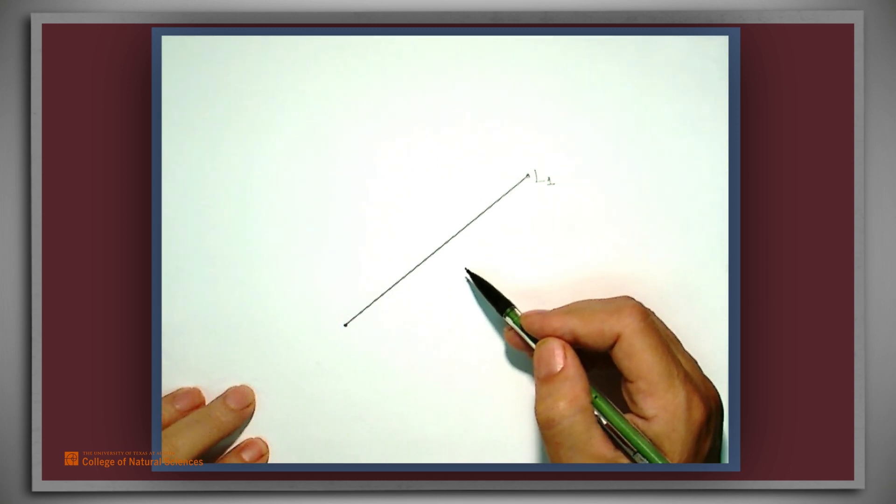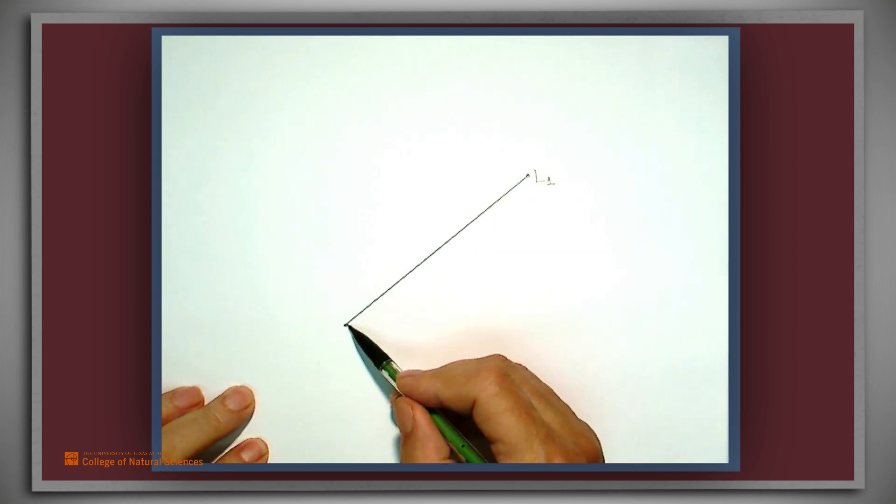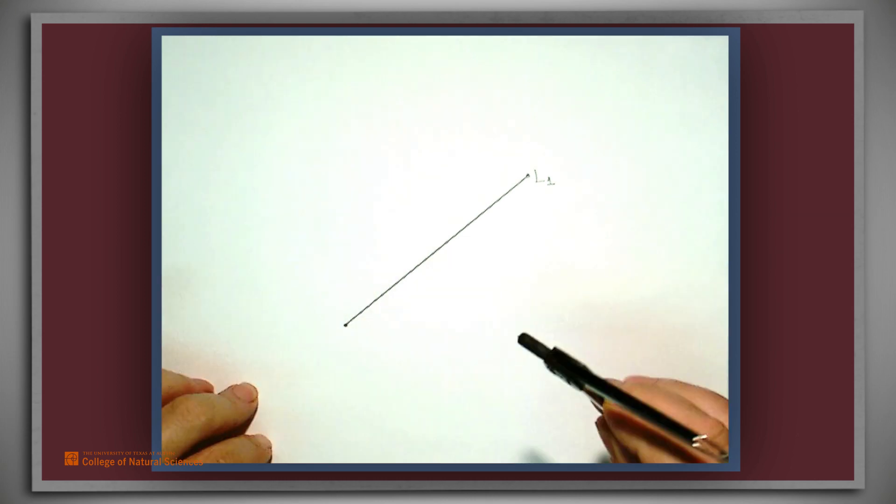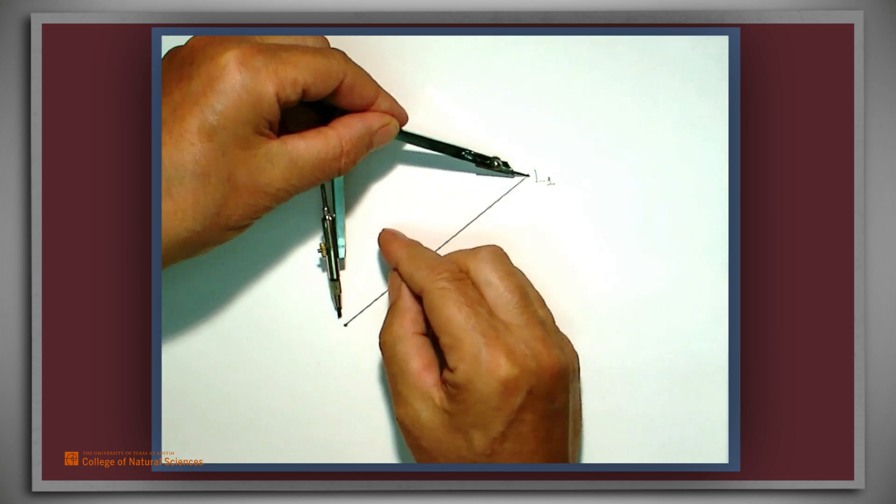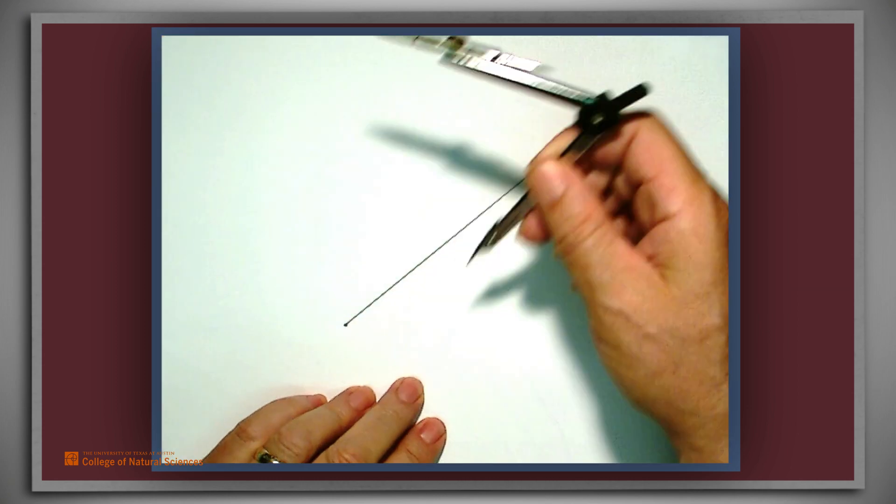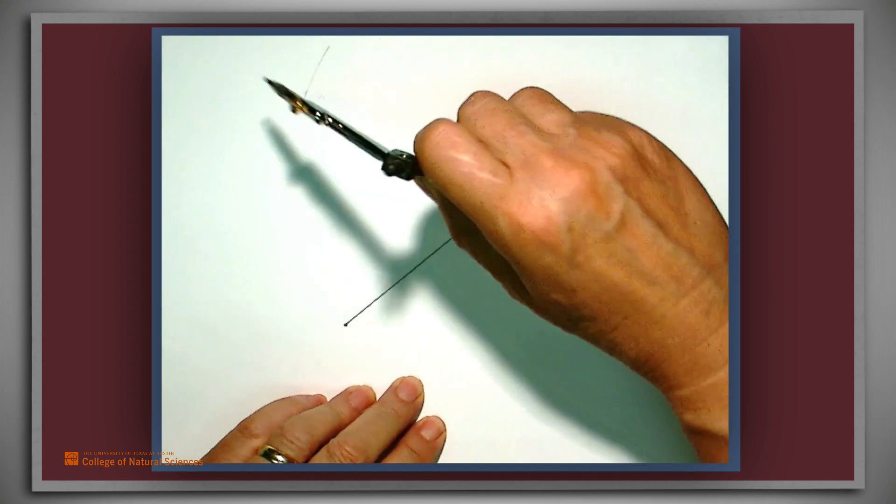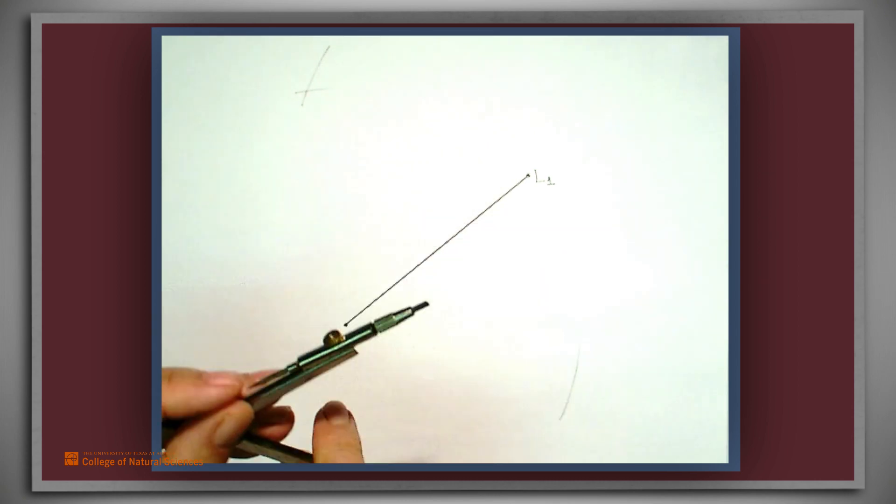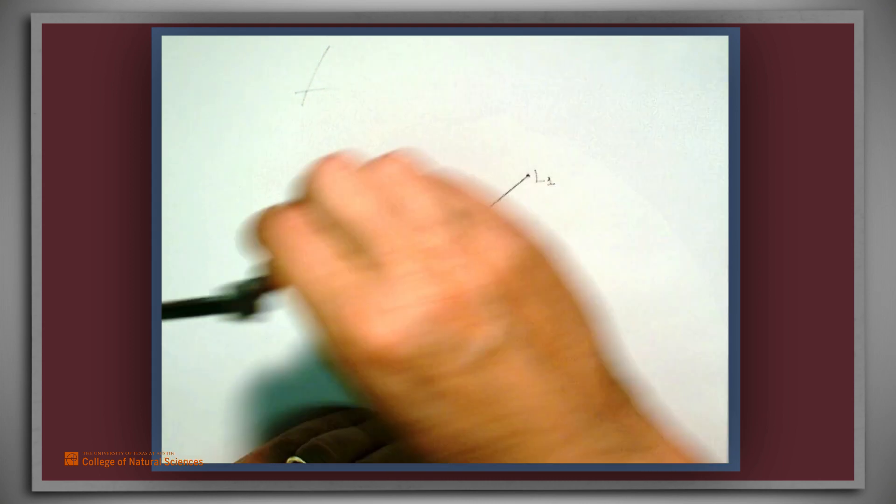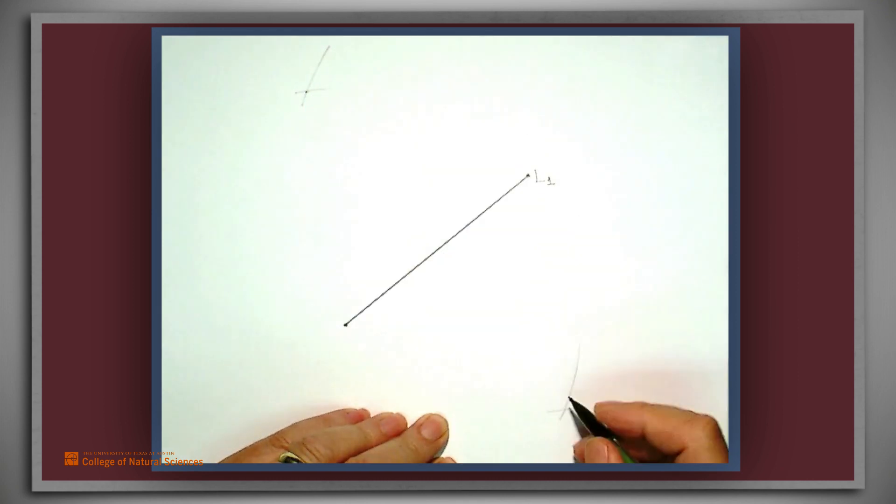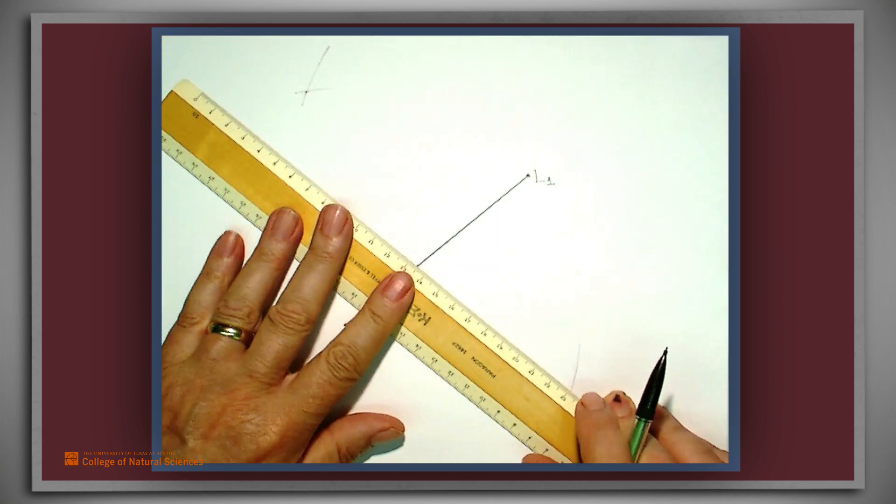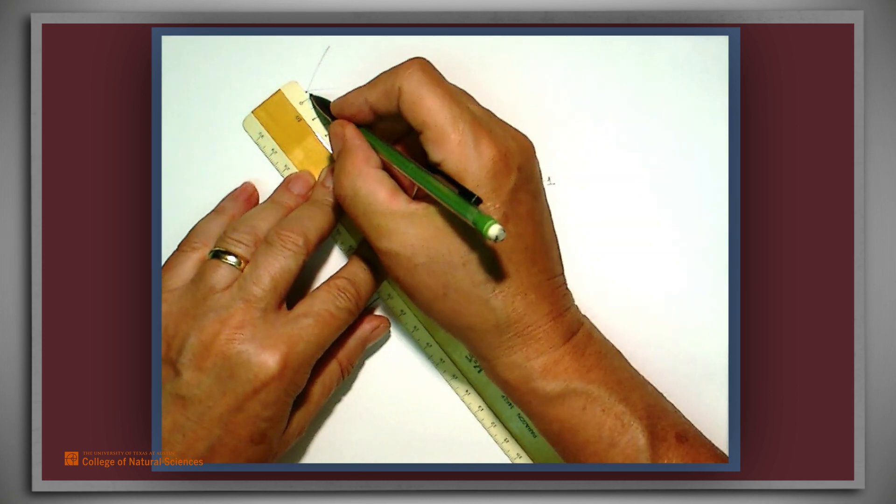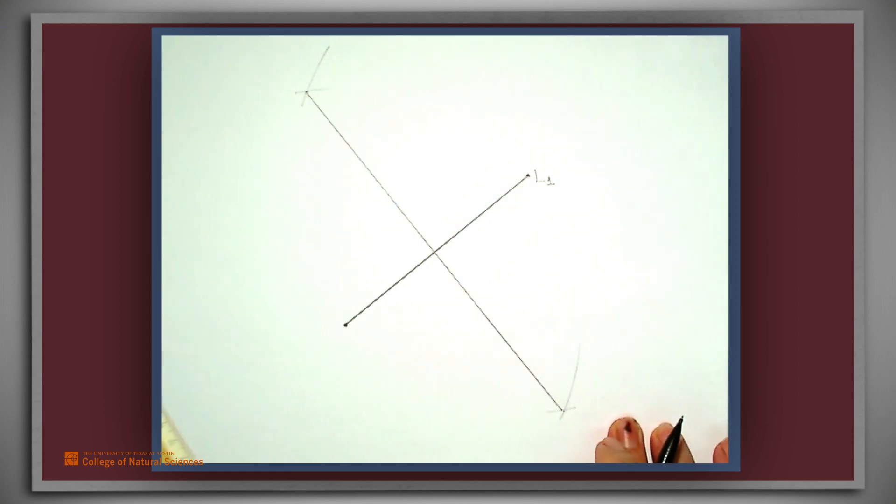Using compass and straightedge, we seek to find a perpendicular bisector of the line segment L1. To do that, first we take the compass and set the distance on the compass to the length of the line segment L1. Then we draw some arcs from the two endpoints to get these two points, which then are equidistant from the endpoints of the line segment L1. Connect those two points using a straightedge. And the claim is we have created a perpendicular bisector of L1.